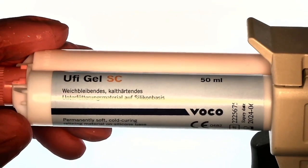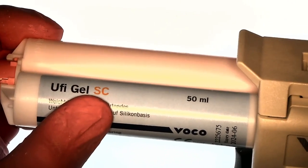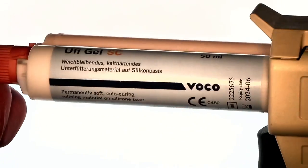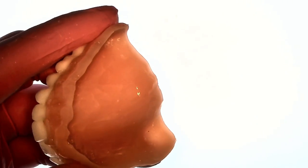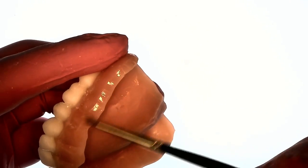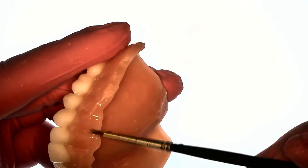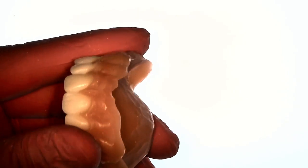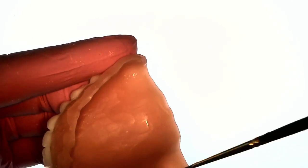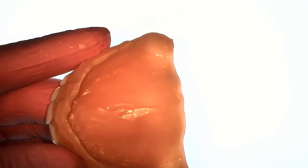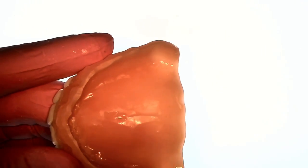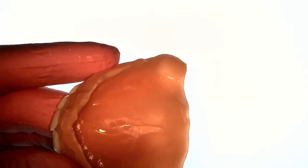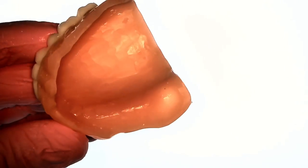Now this is the product, it's a VOCO product. It is a permanent soft reline but I also use it as a tissue conditioner because I find it very friendly to the soft tissues. It's a silicone based product, very biocompatible. The first thing is on your dried surface you need to paint two coats of this adhesive all the way around. Extend just a little bit beyond your chamfer margin there on the borders of your denture and apply a thin coat everywhere and then air dry it.